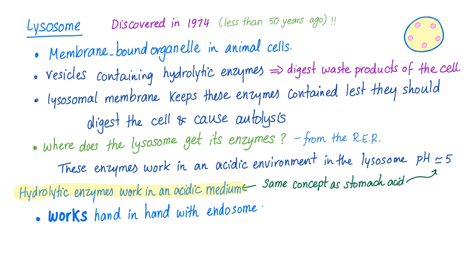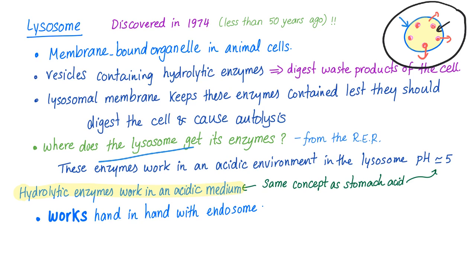These enzymes are contained within the Lysosome. If they were to get in contact with the cell, they would digest it — a process called autolysis. That's why the lysosomal membrane is very, very important. The Lysosome gets its enzymes from the Rough endoplasmic reticulum.